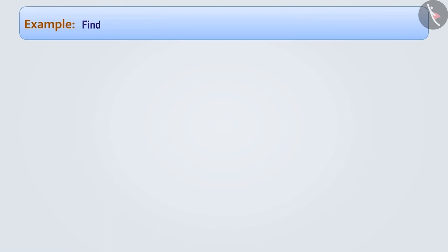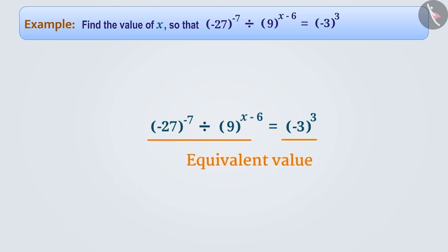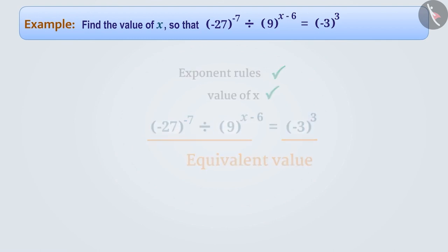Next example: find the value of x so that (minus 27) to the power minus 7, divided by 9 to the power (x minus 6), is equal to (minus 3) to the power 3. You must be aware that in an equation, both sides are of equal value. If we can equate the bases of both sides, we can compare the powers and find the value of x. Let us solve it this way.